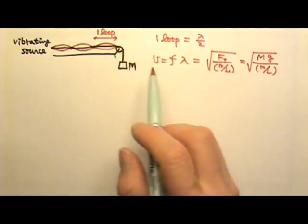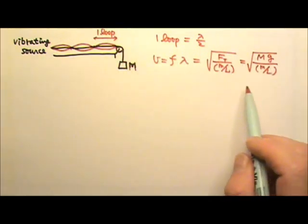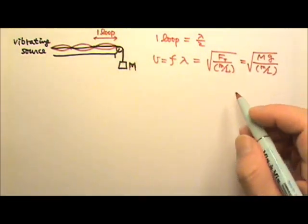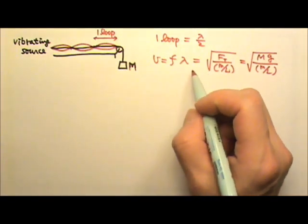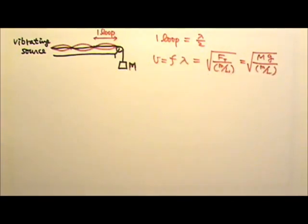And then this little m mass per unit length is the mass per unit length for the rope itself. So in this kind of problem, usually we have one of these things that we don't know. And that means we can find our unknown if we just know everything else.